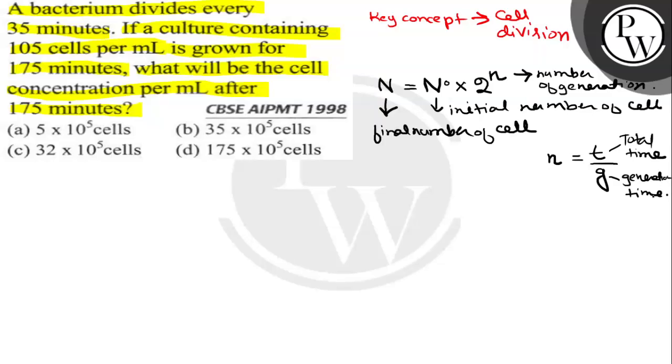Now let's look at the question. We have to find small n first. Here in the question it's given that total time which is taken for 10 to the power 5 cells to grow in a culture is 175 minutes, and generation time, that is the time required by the bacteria to divide, is 35 minutes.